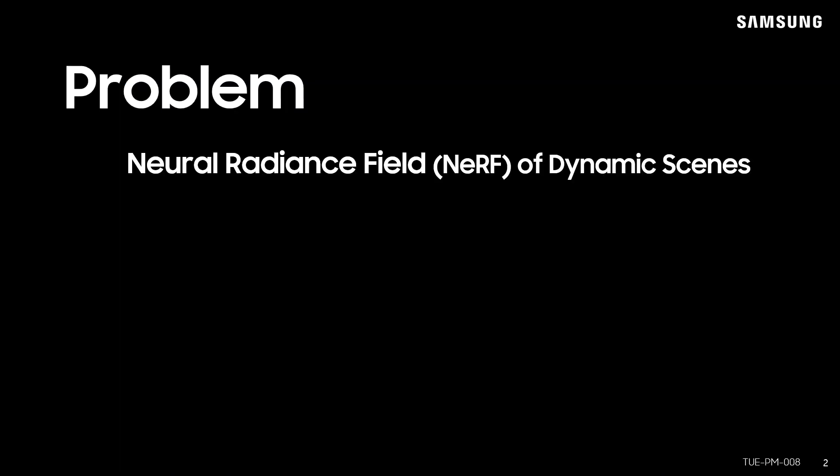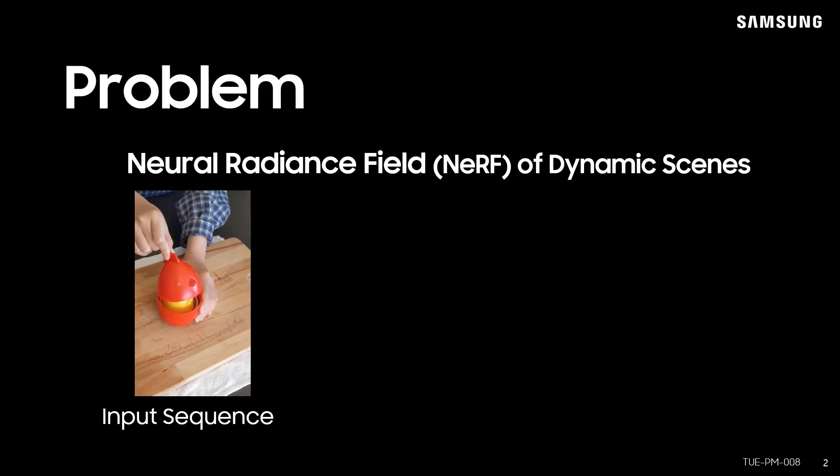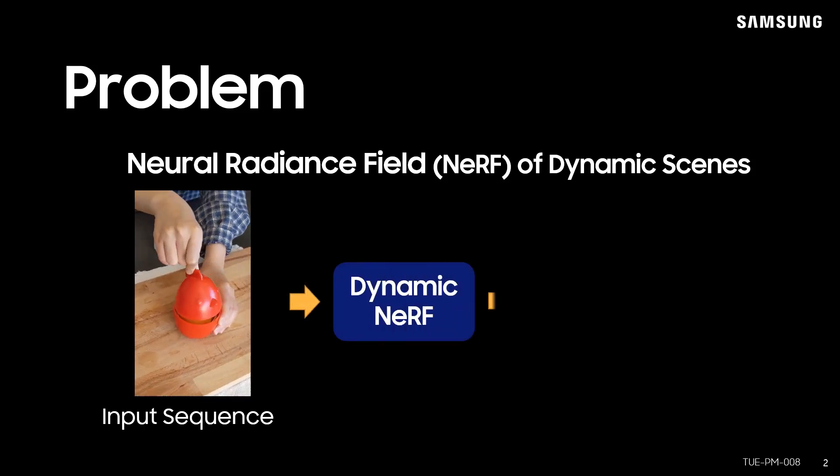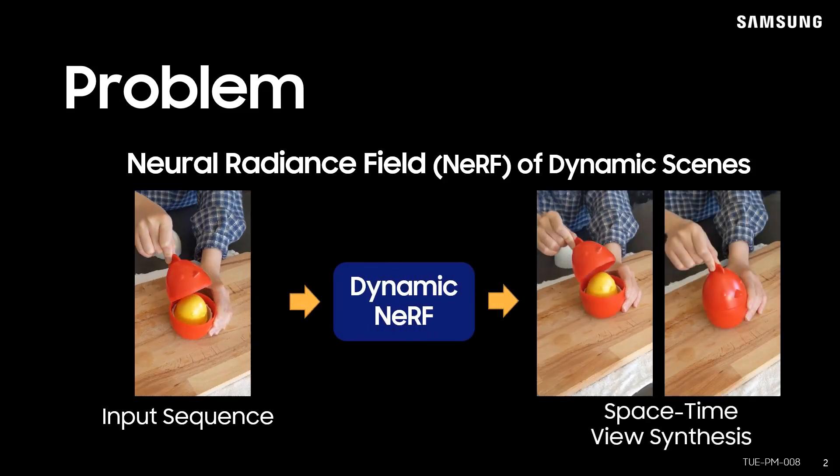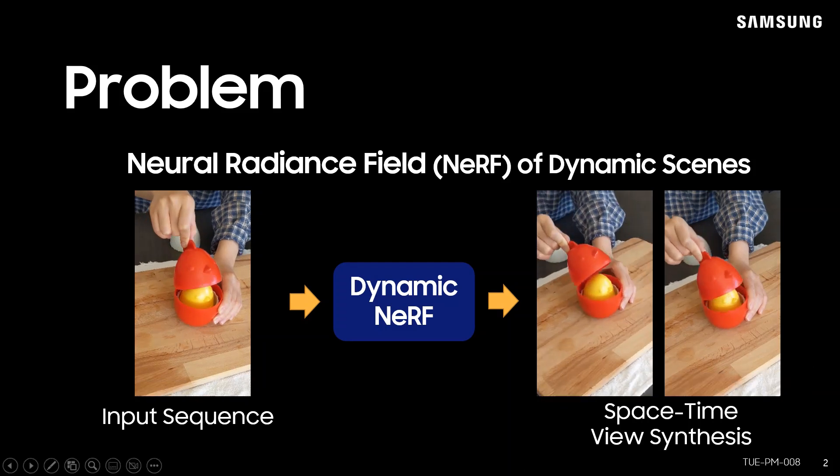In this paper, we tackle the problem of neural radiance fields for dynamic scenes. Given the input image sequence, we train dynamic NeRF models which can perform space-time view synthesis.